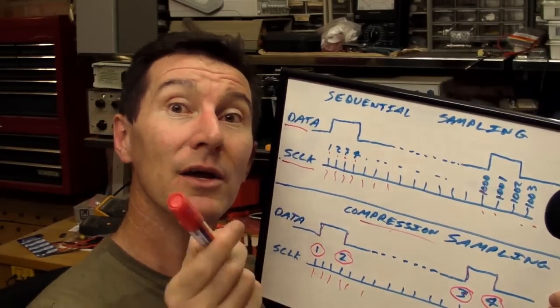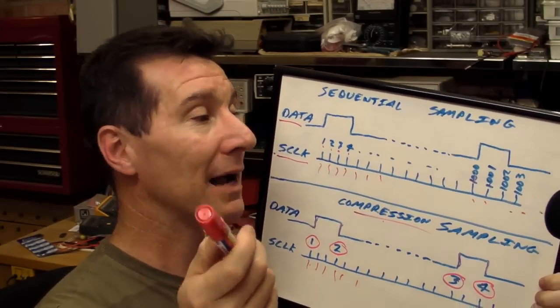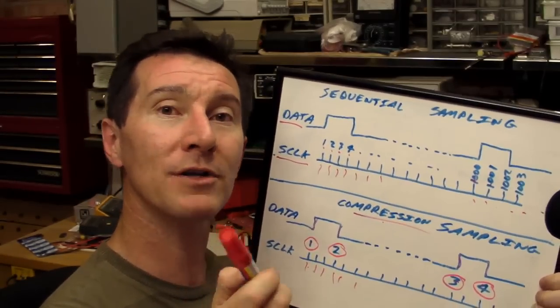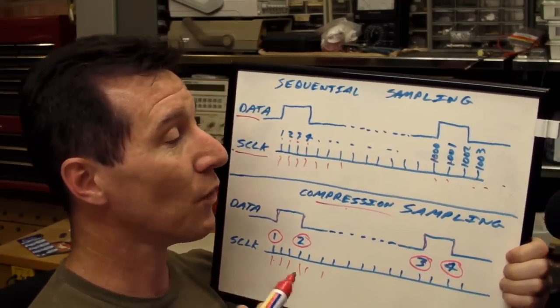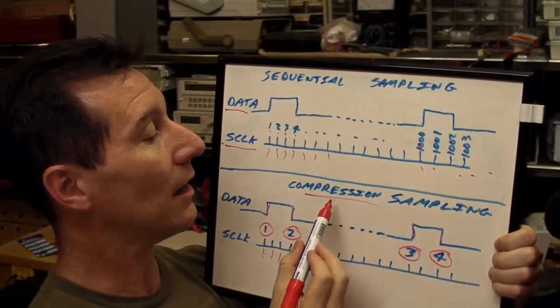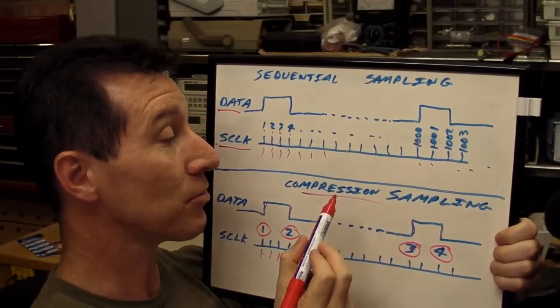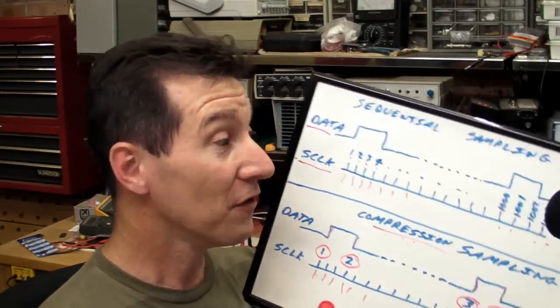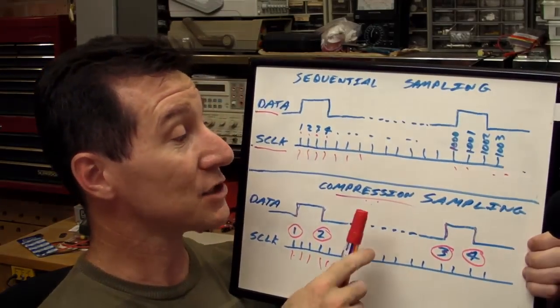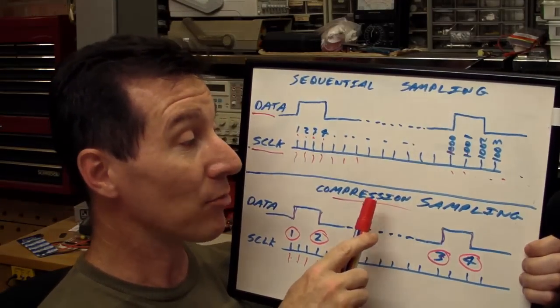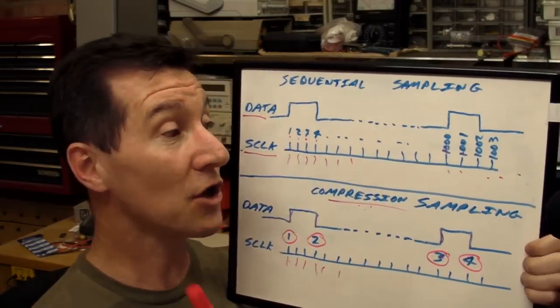Generally, on the market, in mid- to low-priced logic analyzers, you won't get that. Your logic analyzers that use compression sampling will generally only have a couple of kilobytes or something like that of sample memory. So that means there's a trade-off with these small sample memory logic analyzers.